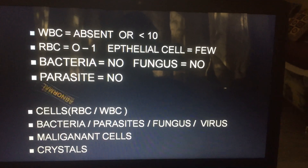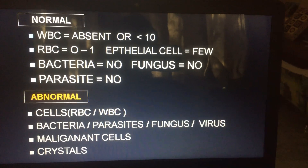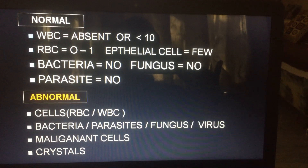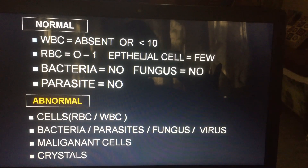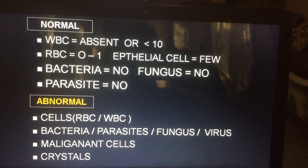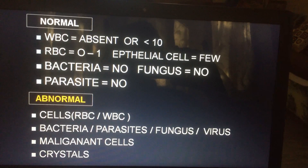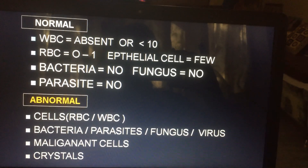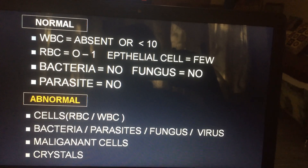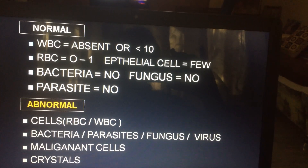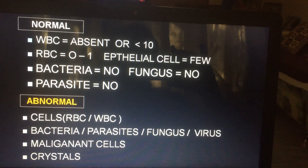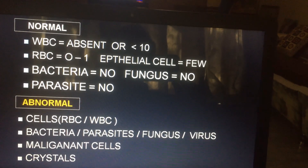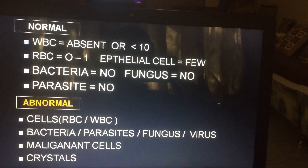In a normal person, WBC are absent or less than 10, RBC are 0 to 1, epithelial cells are few, bacteria are negative, fungus is negative, and parasites are negative. In an abnormal result, RBC present more than normal is taken as abnormal, and WBC more than 10 is considered abnormal. Detection of bacteria, parasites, and fungus is usually not possible by microscopic examination alone, but if bacteria, parasites, or fungus are present, it is 100% abnormal. Malignant cells detected by special staining are also considered abnormal.